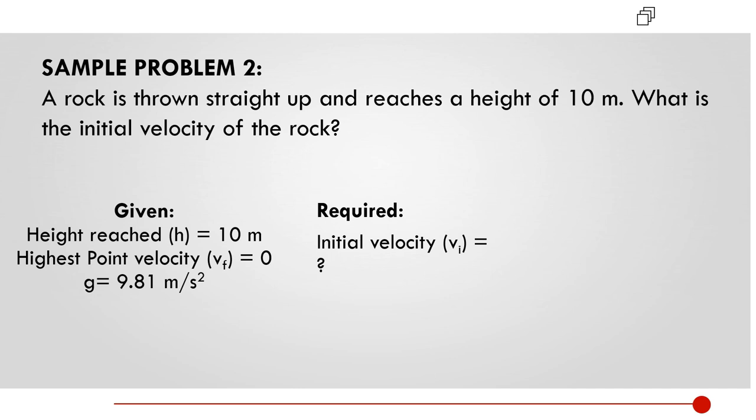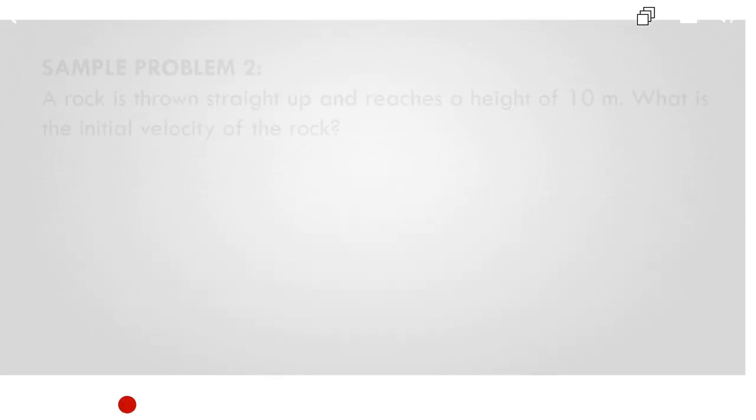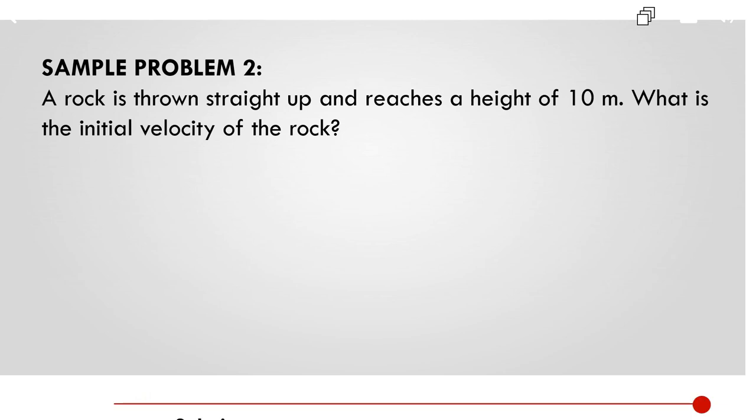The value that we're trying to find is the initial velocity of the rock. The equation that we're going to use is final velocity squared is equals to initial velocity squared plus 2 times the gravity times the height.